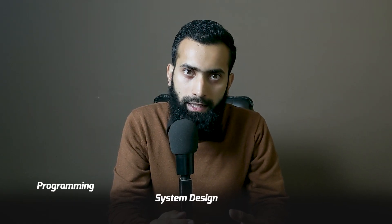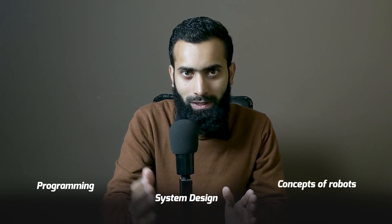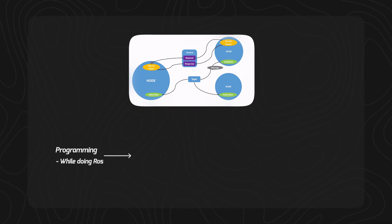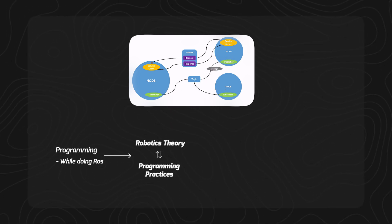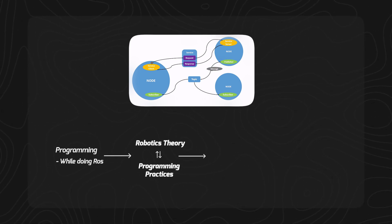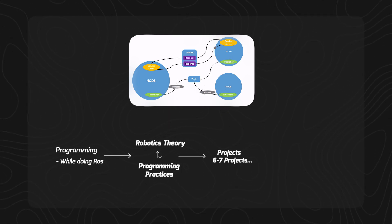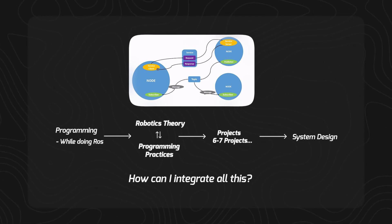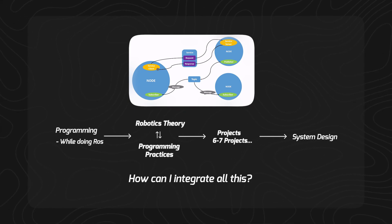ROS2 is just a framework for robotics, but it involves programming, system design, and theoretical concepts of robots. You have to divide these into steps — first be good at programming while doing ROS, work through robotics theory and programming practices in parallel. Once you are better at these — it takes time — you need to build six to seven big simulation projects. After that, you move to system design: how to integrate packages and learnings into other libraries, languages, web interfaces, or hardware interfaces. Be patient, but move strategically.